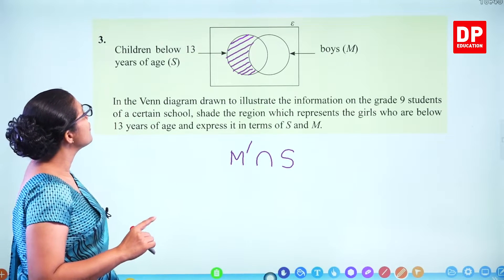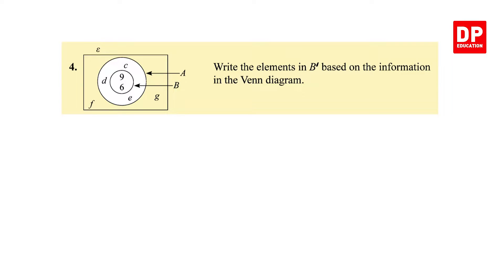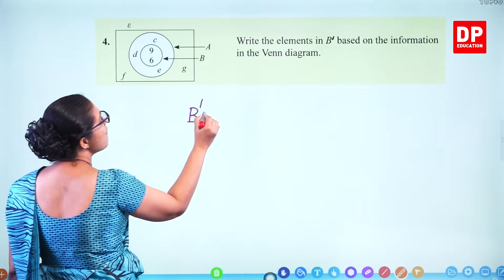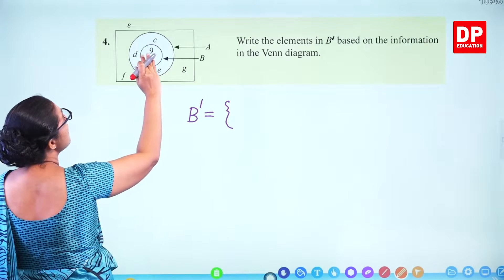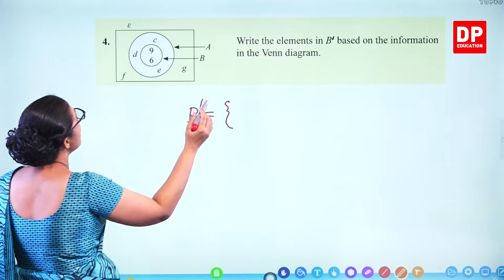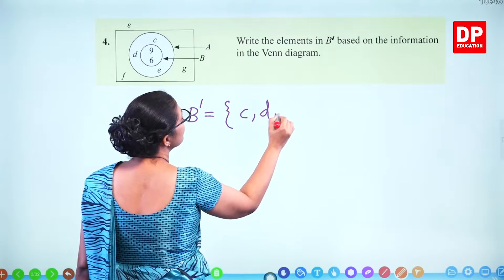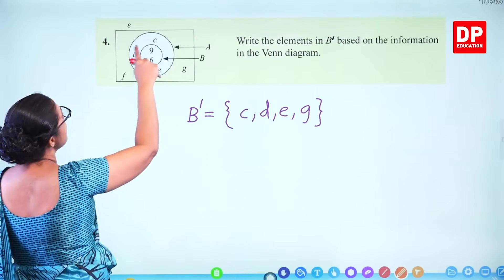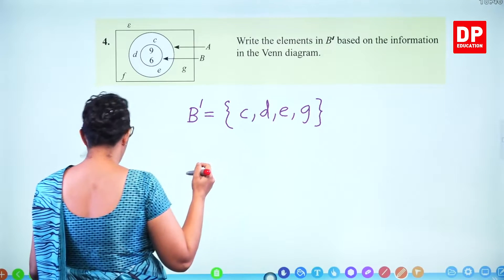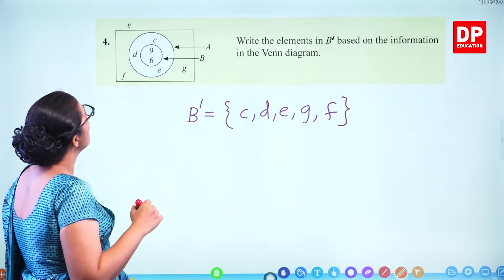Express this in terms of S and M. This is M dash — outside M but intersects with S. So M dash intersects with S. S is the children below 13 years of age. Write the elements in B dash based on the information in the Venn diagram. B dash means everything outside B, so you have to write down C, D, E, G, and F also — F is outside B.